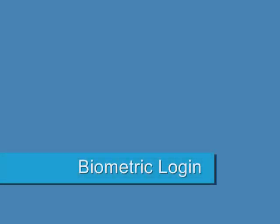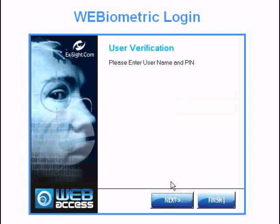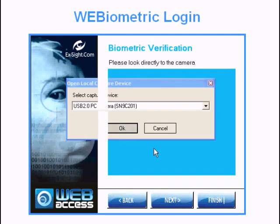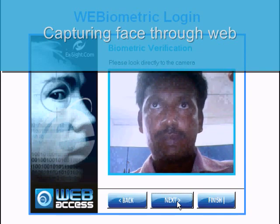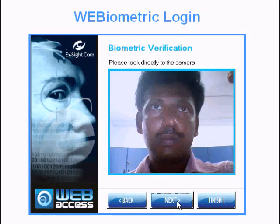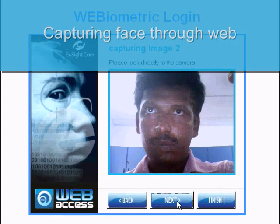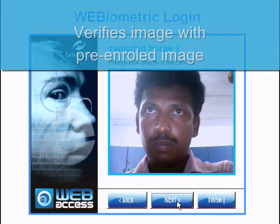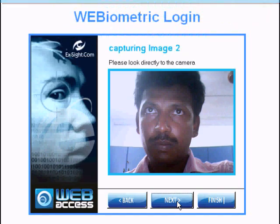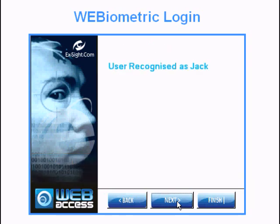Face biometric authentication through the web — how it works: Web Access prompts to enter the user name and permanent digit PIN. Web Access then captures and verifies the user's face image against the pre-enrolled face template. After successful verification, Web Access permits access to system resources.